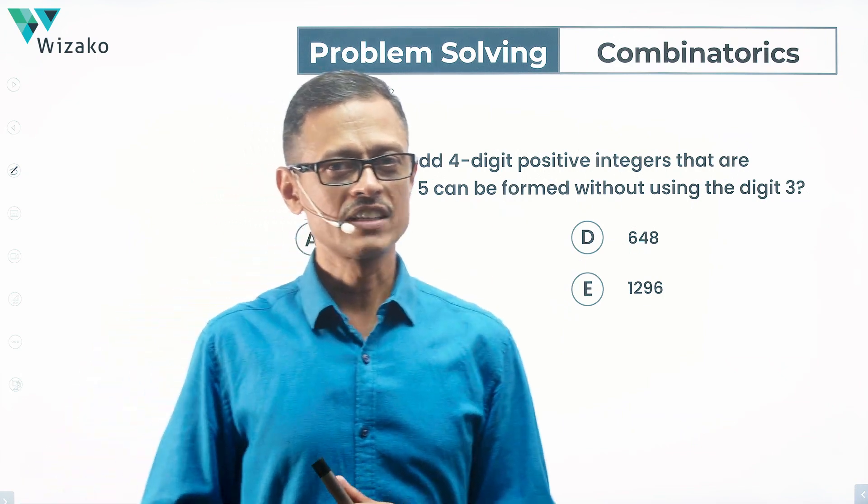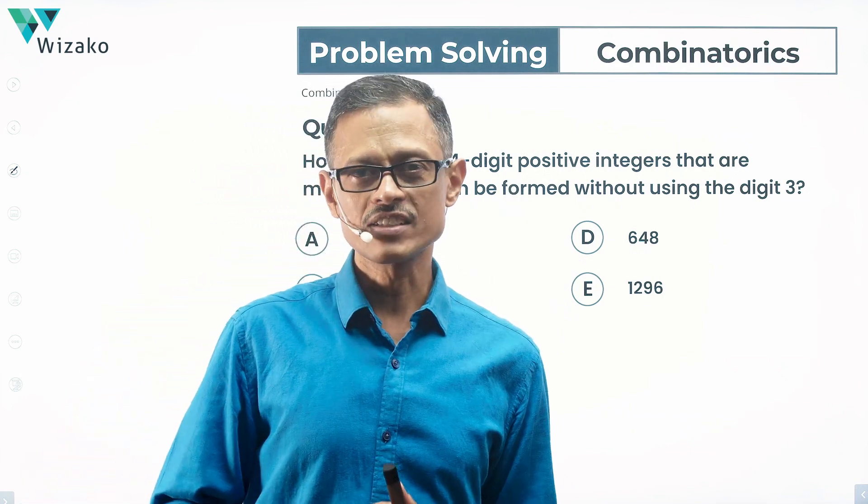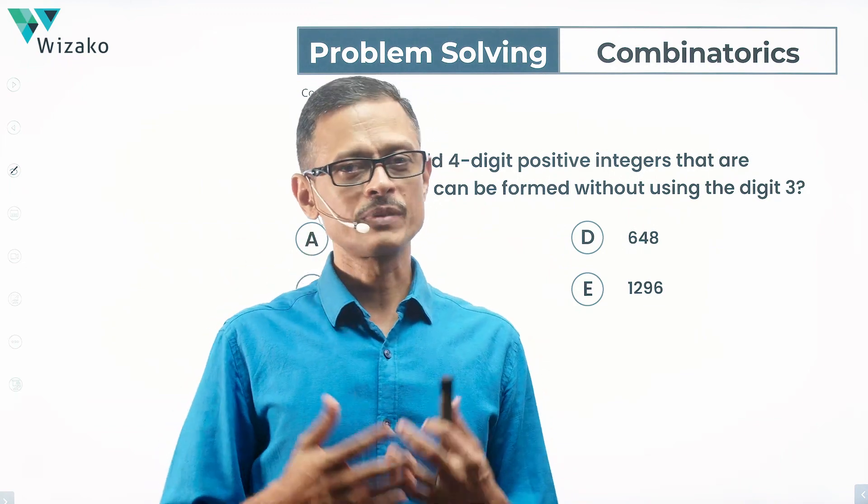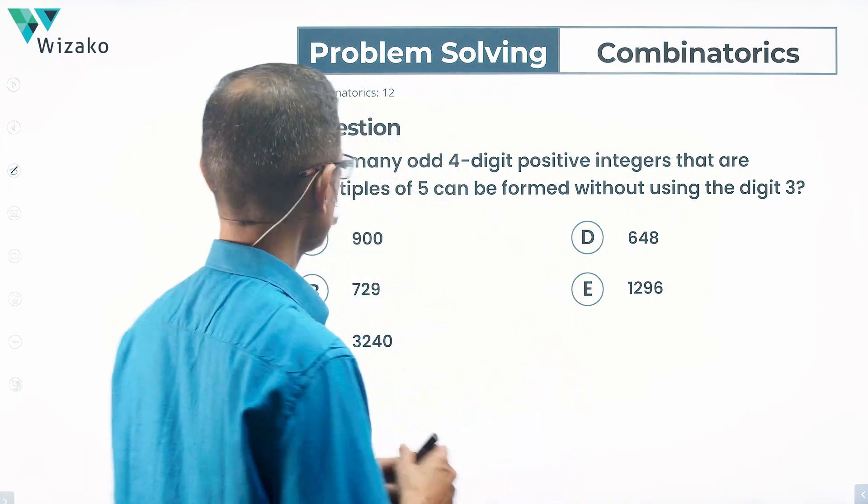This is a medium difficulty problem-solving question. This GMAT problem-solving question is from Combinatorics, Permutation Combination. Numbers and digits is a concept tested in this question. Take a look at the question.